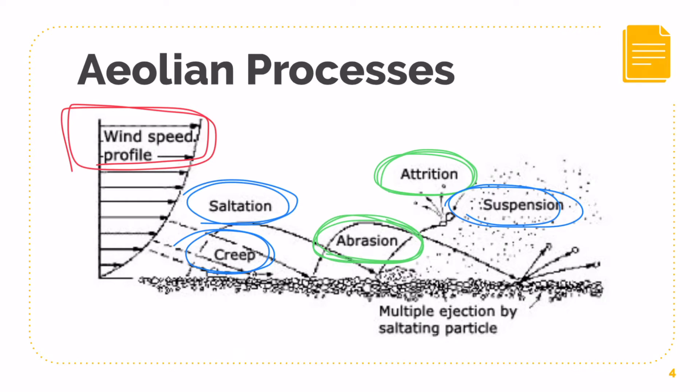Later on, if you see a star next to a process, it means that that process is going to be very important, and mostly you're going to have to use it when it comes to your landforms explanation.